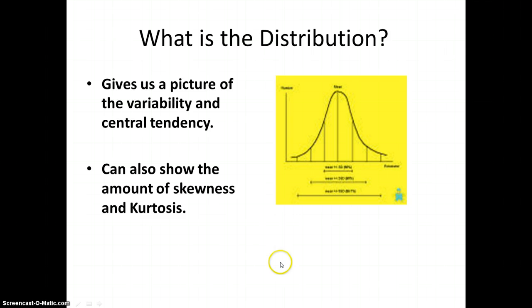Look at the distribution. In this case, we can see the variability in this normal distribution. We can see where the mean is in this normal distribution. We can also see the amount of skewness or kurtosis. Skewness has to do with most of the data on one side of the mean or on the other side of the mean. And kurtosis has to do with the range of the data.